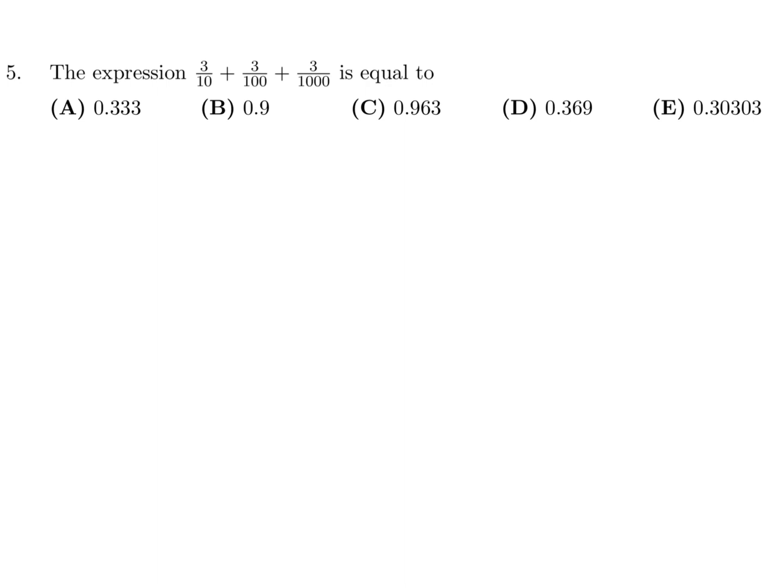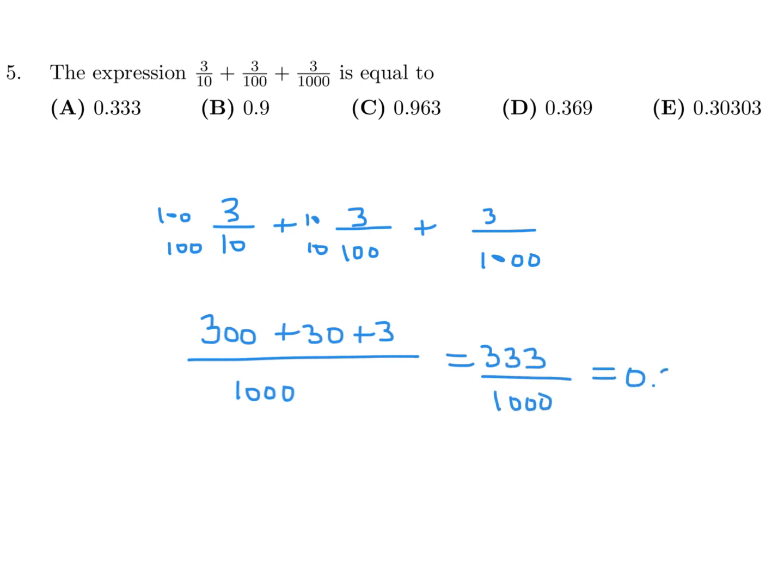The expression 3 over 10 plus 3 over 100 plus 3 over 1000. Let's add this: common denominator top and bottom here, top and bottom here times 10, top and bottom times 100. That gives me 300 plus 30 plus 3, all over 1000. That's 333 over 1000, and as a decimal it's 0.333.